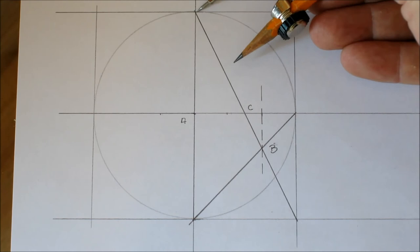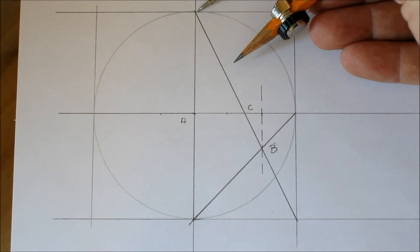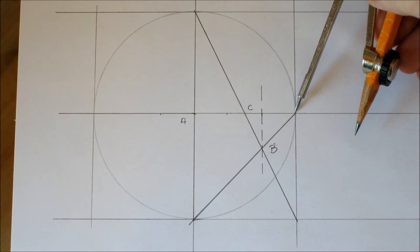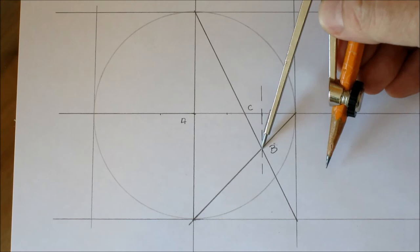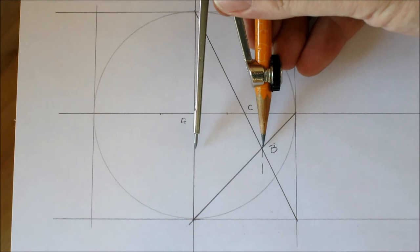This diagonal right here from here to here gives you point C, which is bisecting this line, which gives you your square and one quarter. And this line here, instead of drawing this diagonal, we draw this diagonal, and that